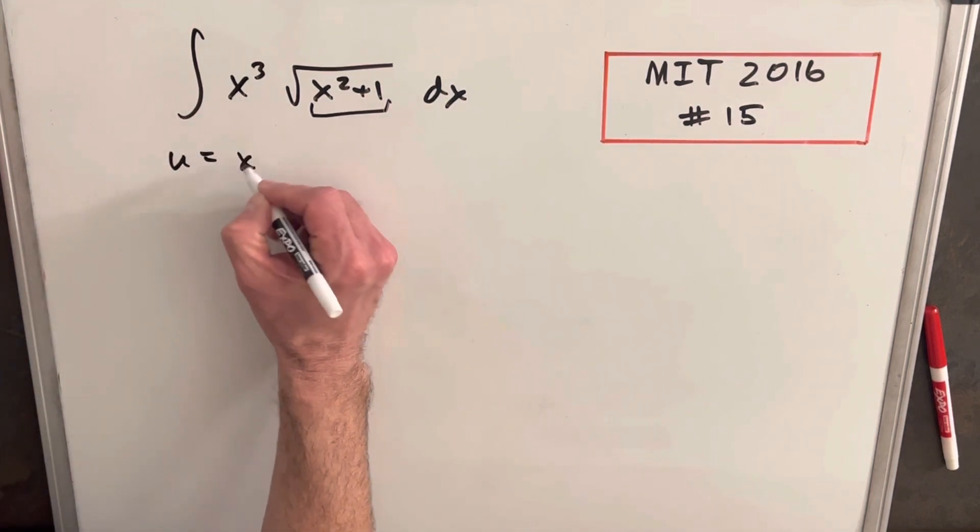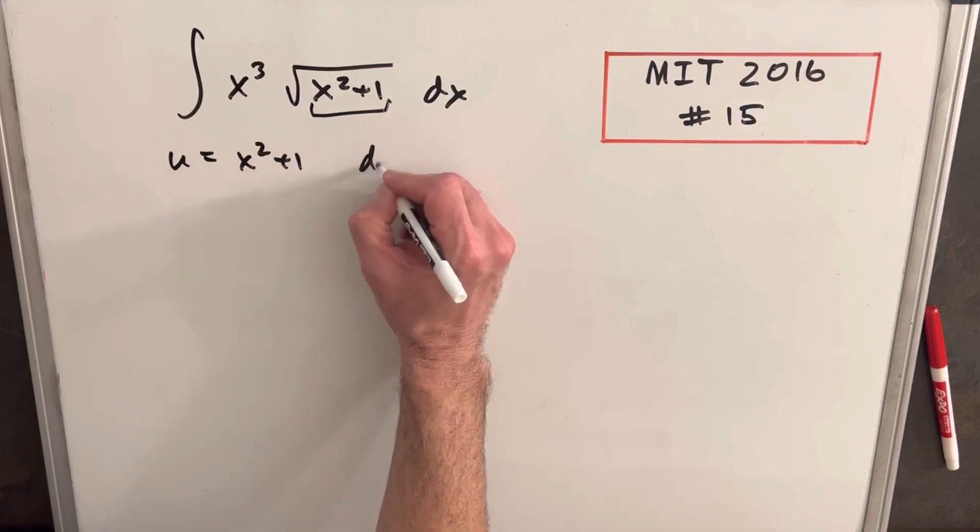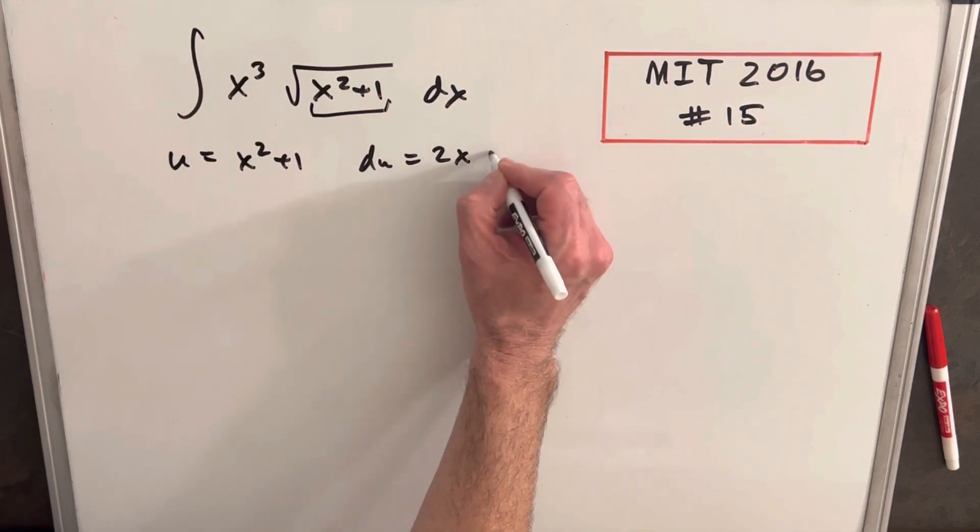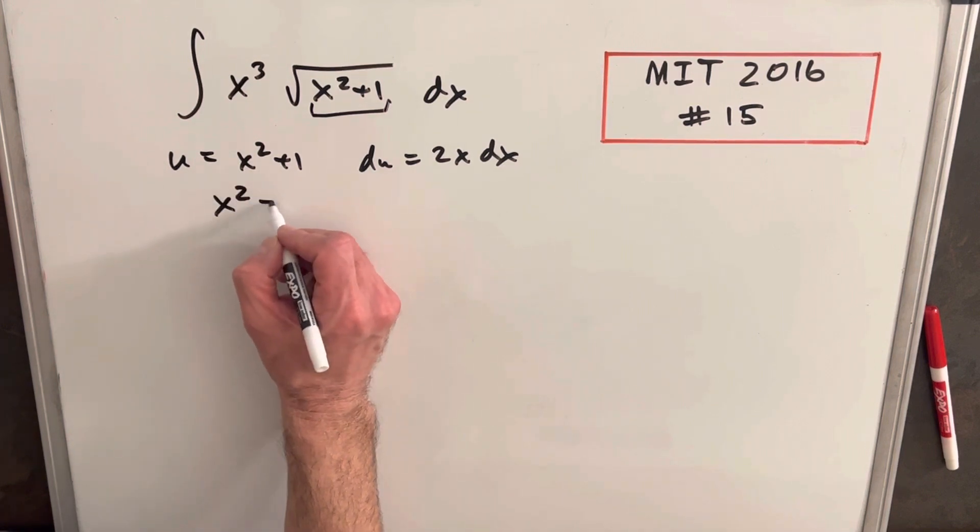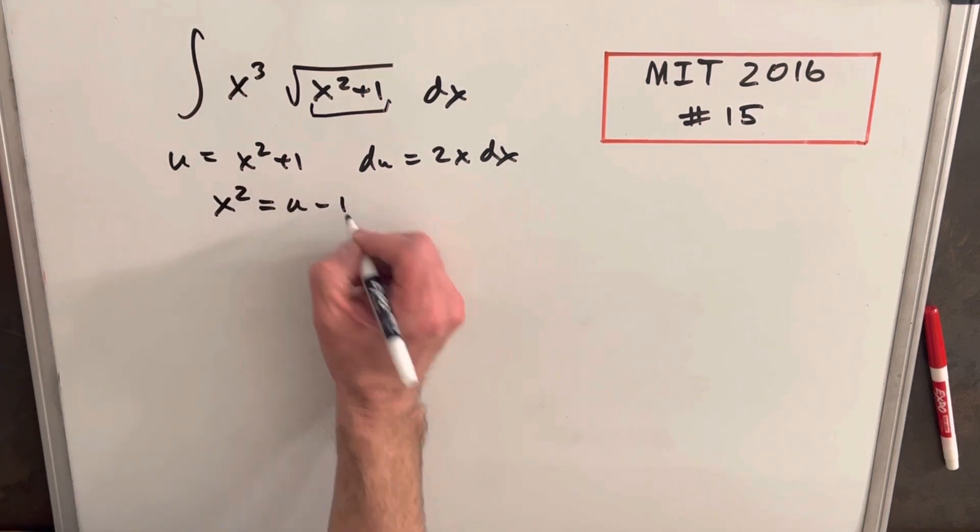So what we'll do is we'll say u equals x squared plus 1, du equals 2x dx. I think I'm also going to need x squared, so we'll solve for x squared and we'll say x squared equals u minus 1.